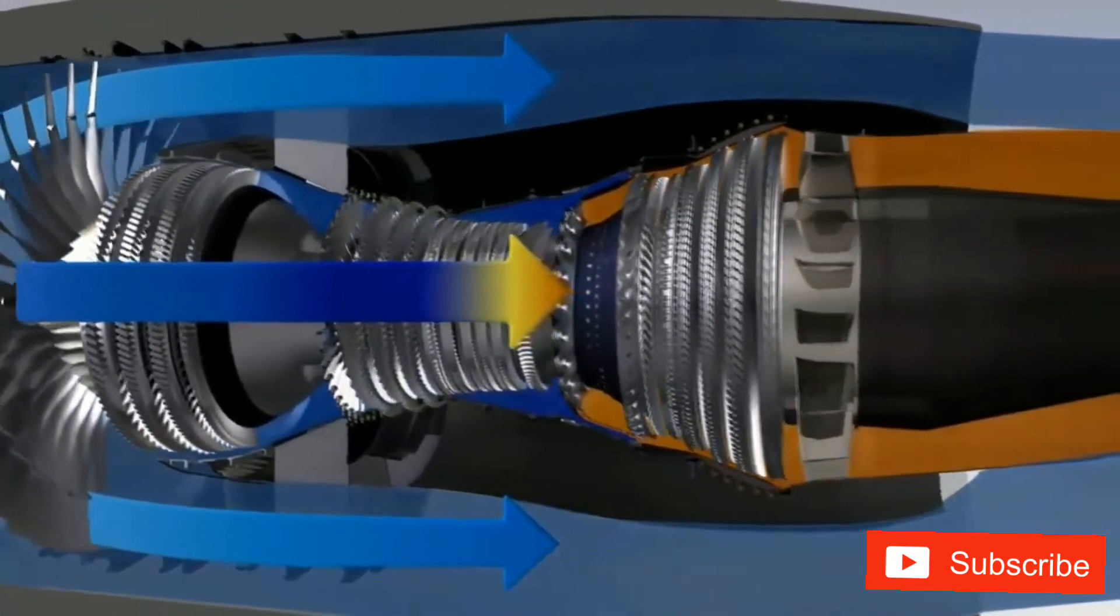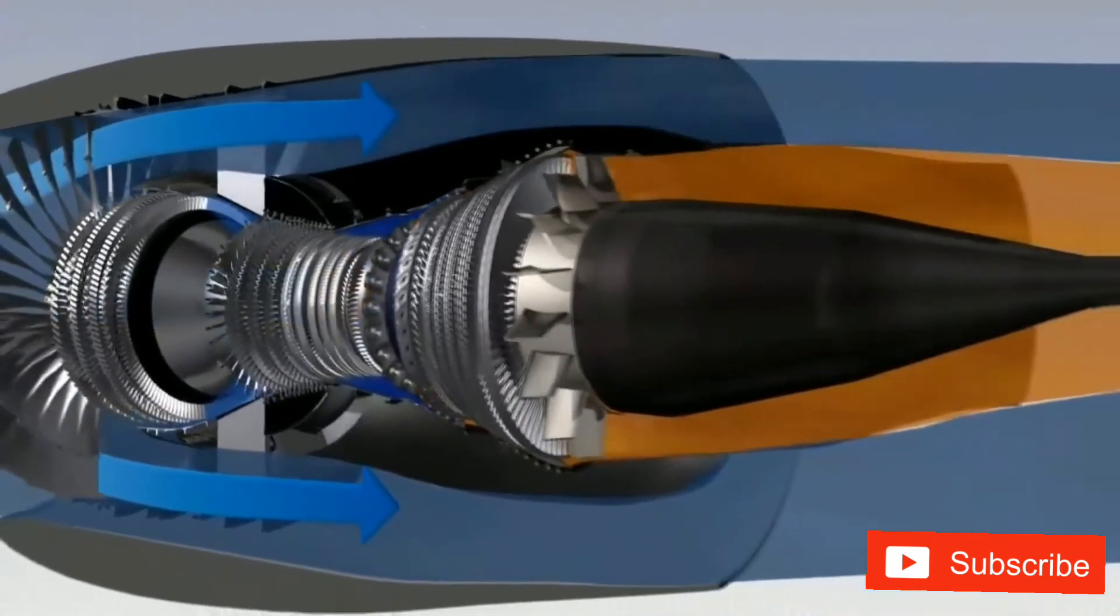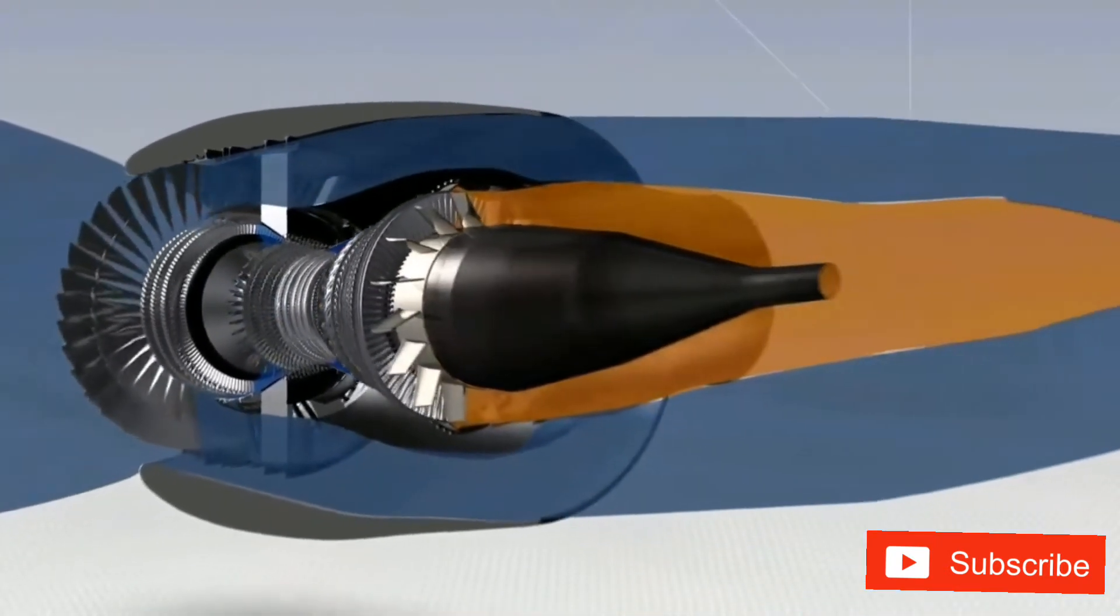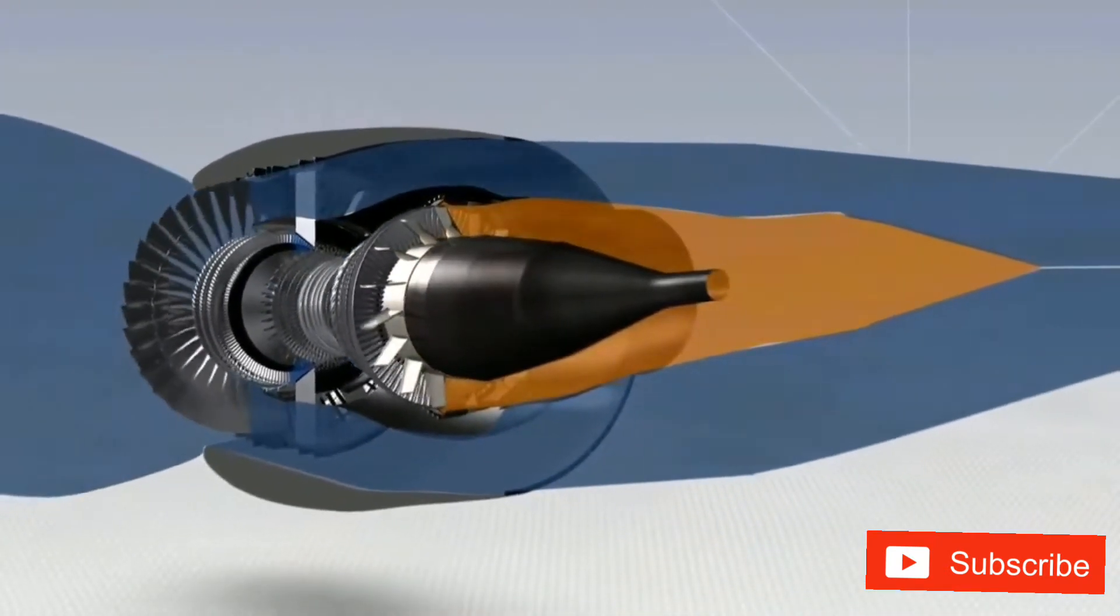80% of the engine airflow, accelerated by the fan, is directed into the bypass duct and provides 80% of the engine's thrust.